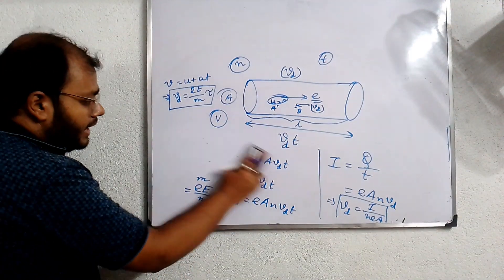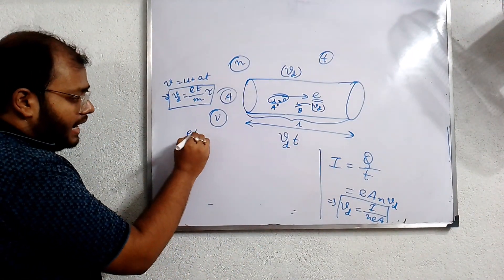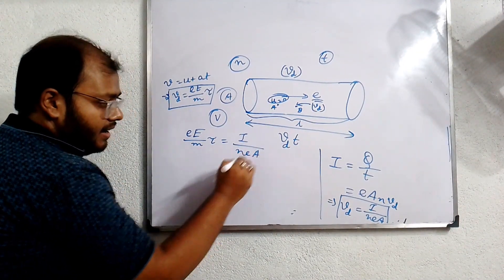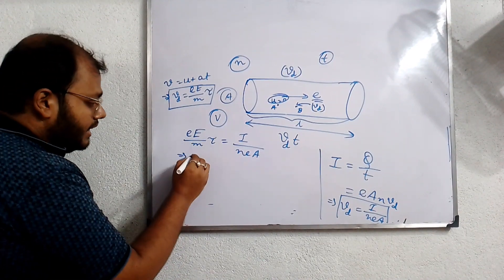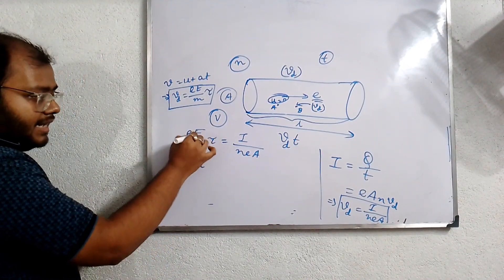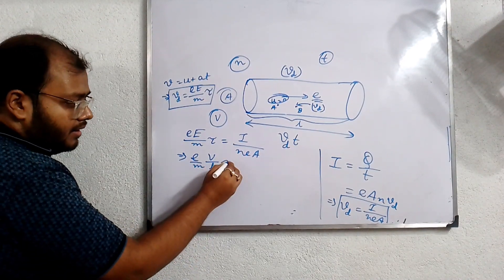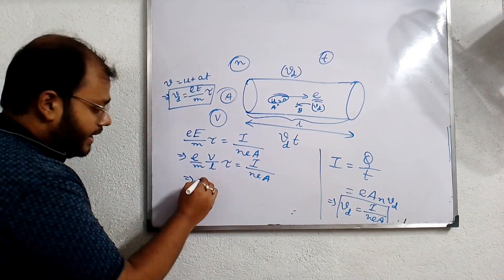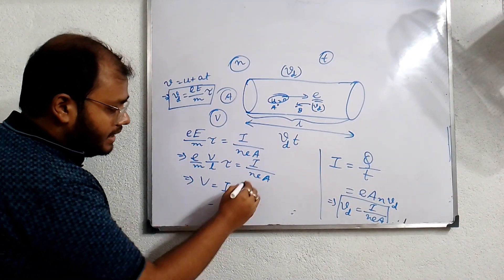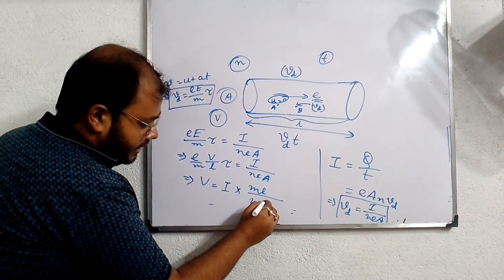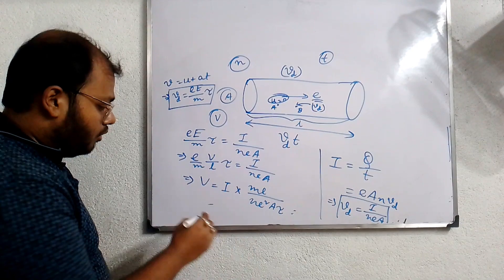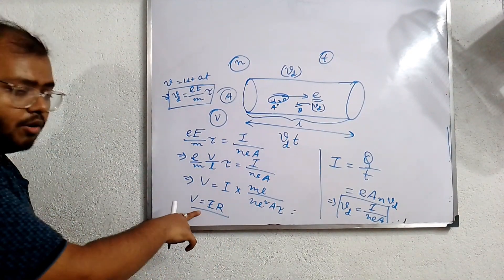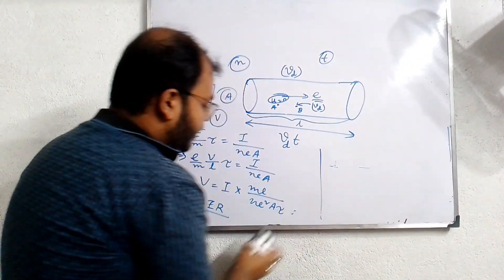Now if we take these two equations, we can write (e·E/m)·τ = I / (N·e·A). This electric field can be written as V/L, so (e/m)·(V/L)·τ = I / (N·e·A). Then we can write V = I · (mL) / (N·e²·A·τ). So it is like V = I·R — this is Ohm's law.